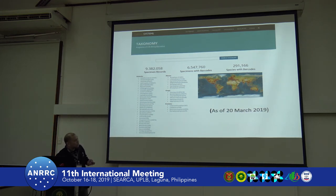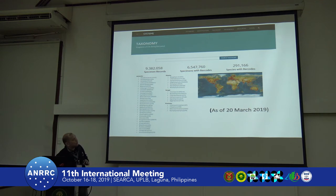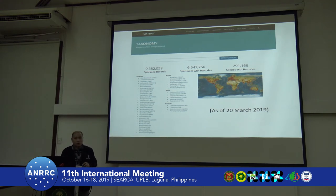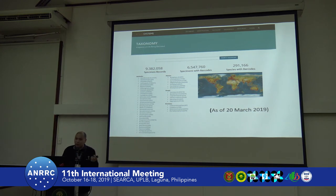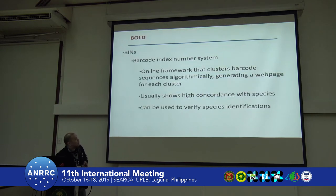As of March 2019, there are 9.382 million specimen records, with 6.547 million specimens with barcodes from 291,000 species. That's still small based on our estimate of millions of species available.